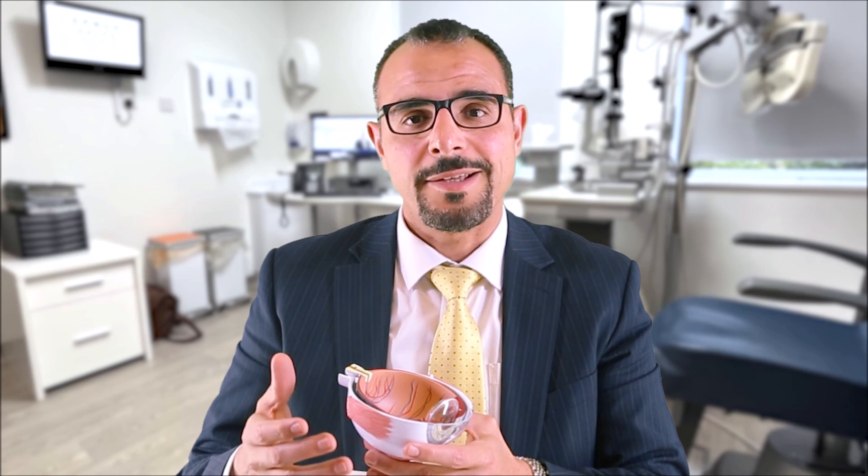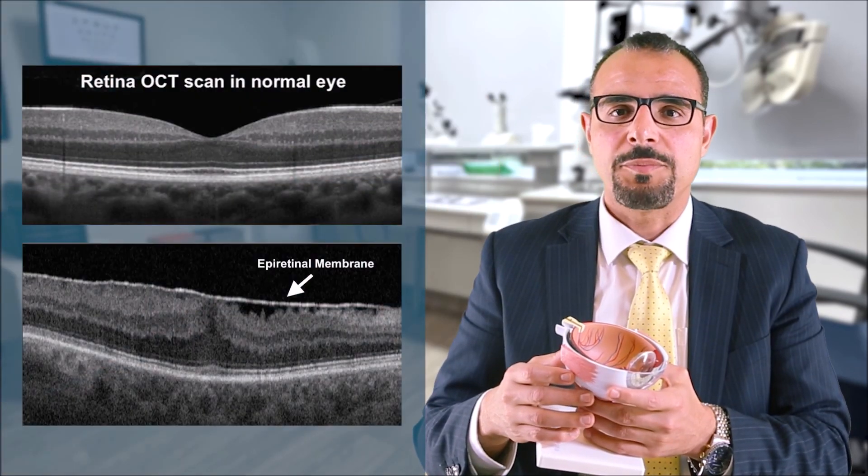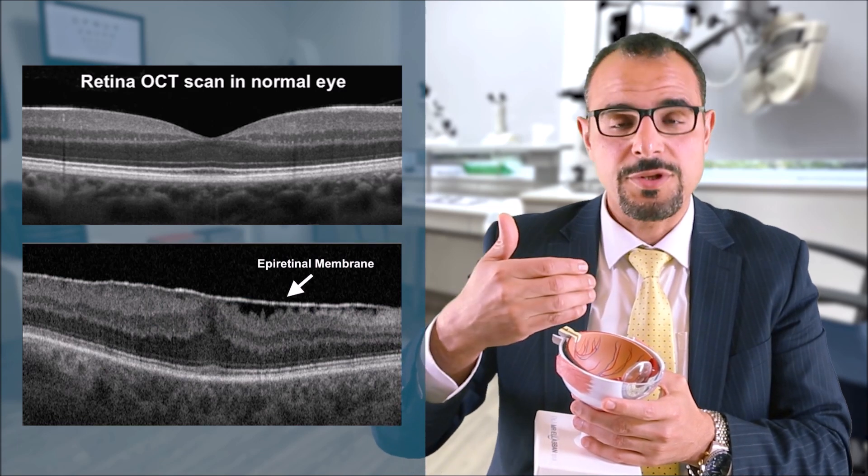Epiretinal membrane is a growth of tissue that builds up on the surface of the retina, leading to wrinkling of the retinal surface, which in turn affects the quality of vision. The diagnosis can be made at the eye clinic by checking the back of the eye or by the use of a scan called an OCT scan, which captures cross-sectional images of the retina.